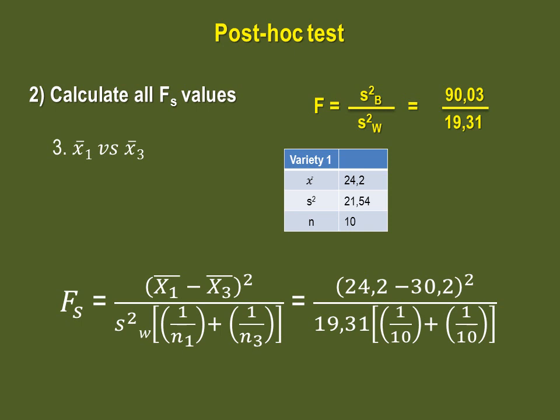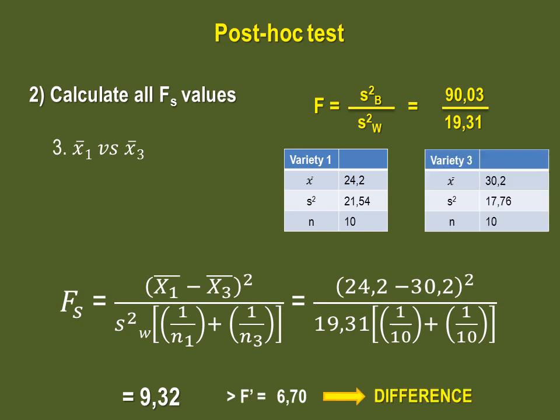Our last verification is between sample 1 and sample 3. Again, our n's are equal, so the only thing that changes in the equation are the means. The F value between sample 1 and sample 3 is 9.32. This is actually higher than our critical value, so there is a significant difference between sample 1 and sample 3.